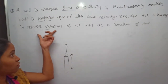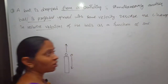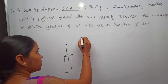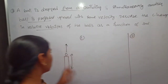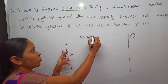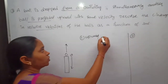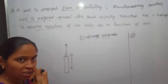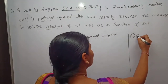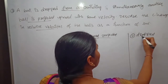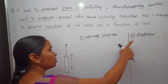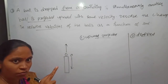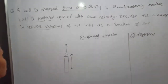First of all we have to find out the relative velocities, and then we have to find out the change in relative velocities of the balls as a function of time. I am taking ball one as the upward projected body, and ball two as the ball which is dropped in the downward direction. We have to find out the initial velocities and relate those velocities.